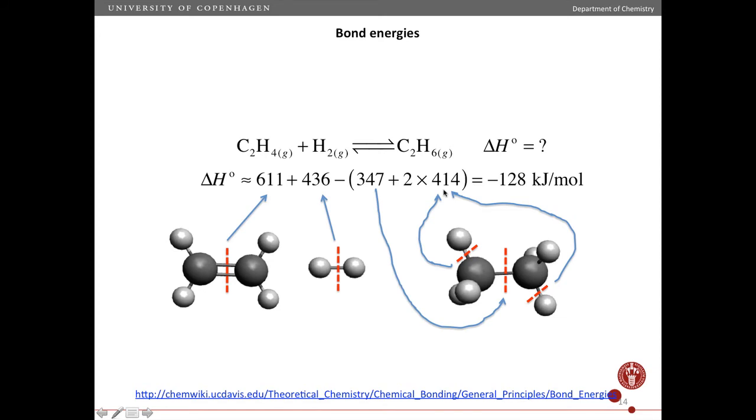And so the most common mistake one makes when using bond energies to estimate delta H is to use these values but switch reactants and products. So take products minus reactants which you are used to from heats of formation. And then you get the wrong sign. So you have to be careful when you do this.